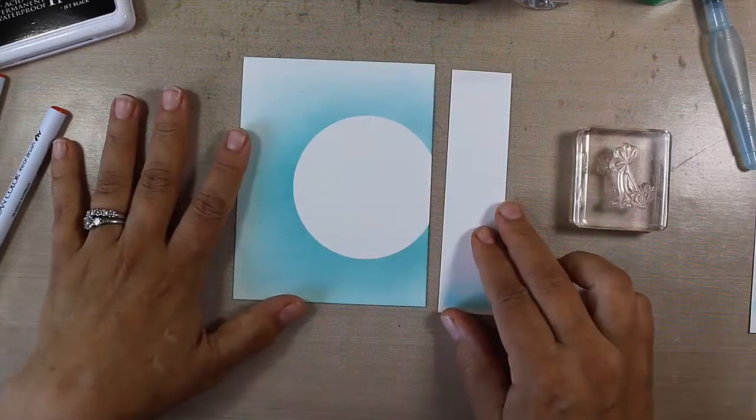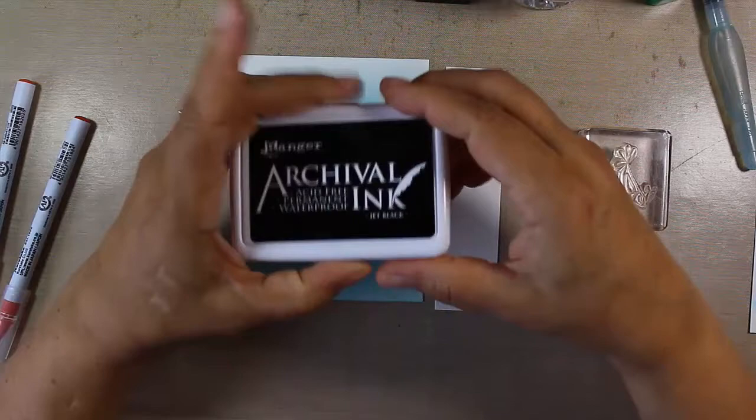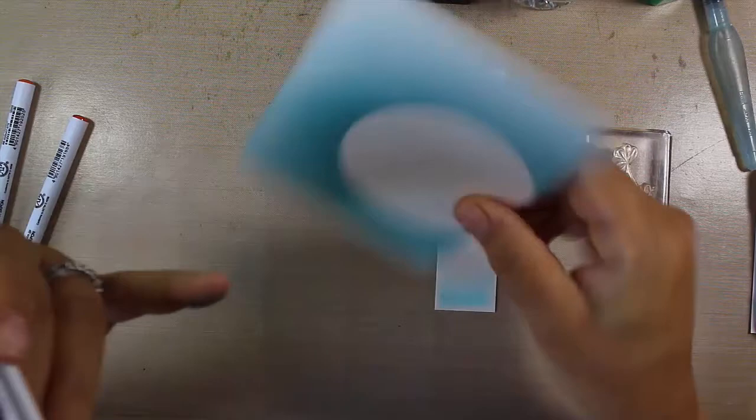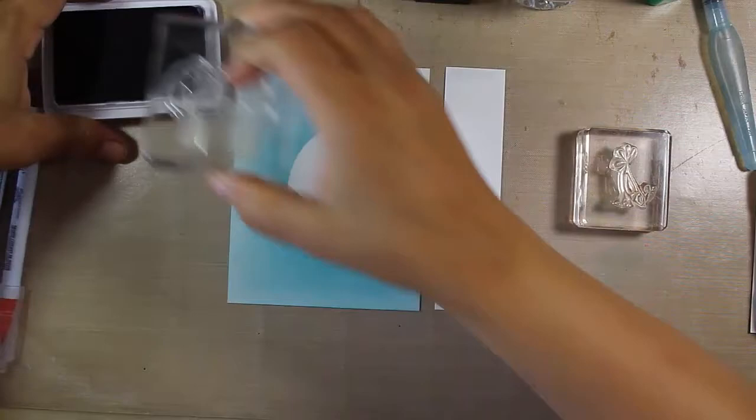I have this really great exposed circle here and I'm going to use some Ranger Archival Ink. This is an acid-free permanent waterproof ink. My watercolor paper has two sides, a rough side and a smooth side. We're going to stamp on the smooth side.